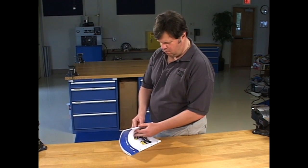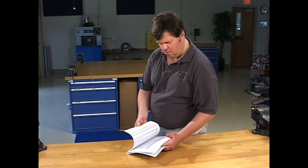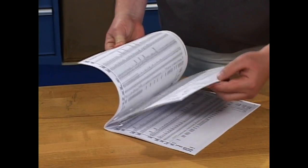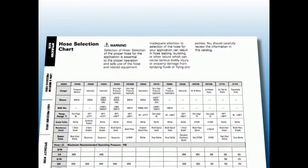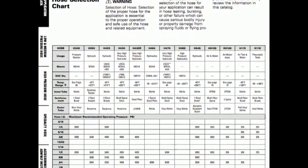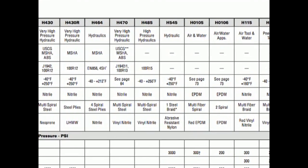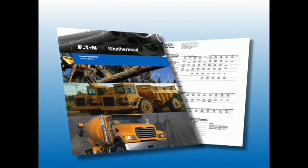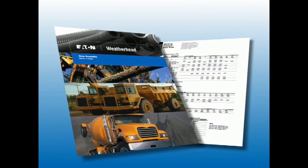Start with the proper hose and hose end selection. Refer to the Eaton Weatherhead Crimp Specification Manual. Be sure that the hose and hose ends you select meet the specifications for the end use. In other words, are these components designed and approved for the type of application for which the hose assembly is being used? Always refer to the Eaton Weatherhead Hose Assembly Master Catalog for the proper Eaton Weatherhead series of hoses and hose ends.